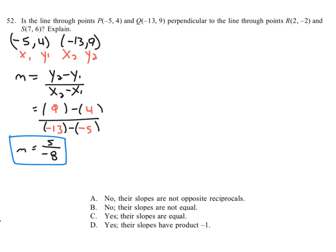And we'll examine that in a second after calculating the slope of this other line through these two points. Two points are 2 comma negative 2 and 7 comma 6. So let's label them as x1 and y1, x2, y2.